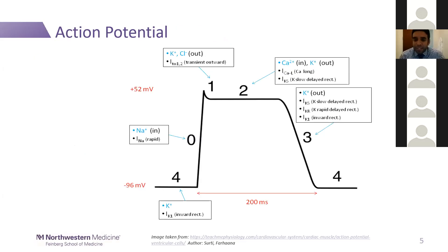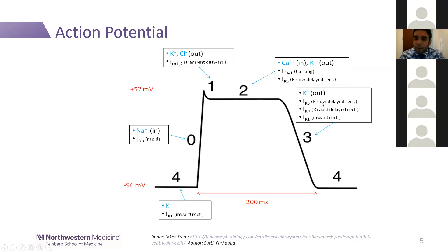We'll do one slide on the action potential. All of our antiarrhythmic drugs focus on their activities on an ion channel somewhere in our action potential. Phase four is our resting membrane potential, predominantly driven by potassium channels — the inward rectifier potassium channel. Class one antiarrhythmics affect phase zero and are primary sodium channel blockers. The class threes as a class almost all inhibit or block the rapid delayed rectifying potassium current in phase three. Each of the medications influences the action potential differently.